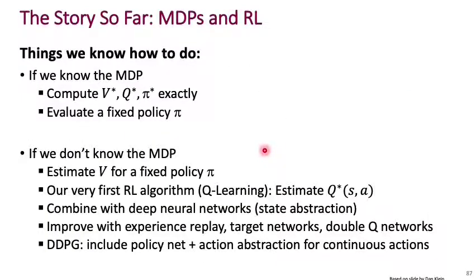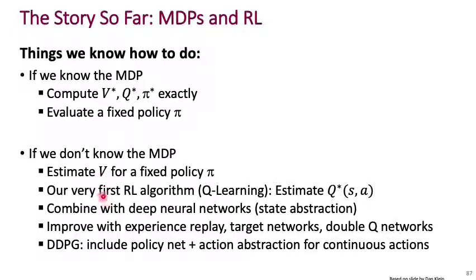Within this MDP formalism, we've seen two kinds of things: what we can do when we know the MDP, and what we can do when we don't know the MDP. When we know the MDP, we can find the value functions and the optimal policies exactly using methods like value iteration and policy iteration. If we don't know the MDP, we've also studied how to do policy evaluation in the context of an unknown MDP, and we've seen our very first RL algorithm, Q-learning, where we estimate the optimal Q corresponding to a state and action.